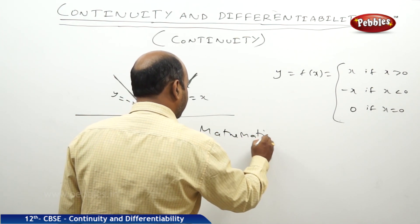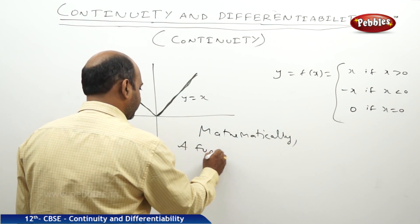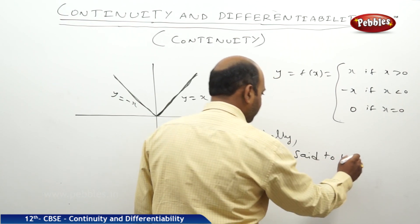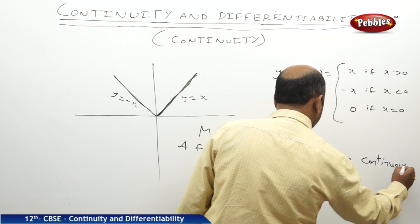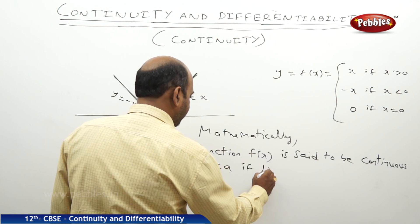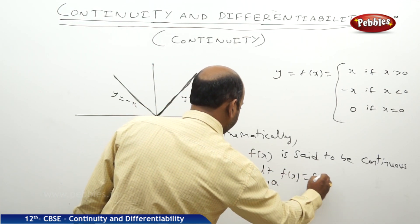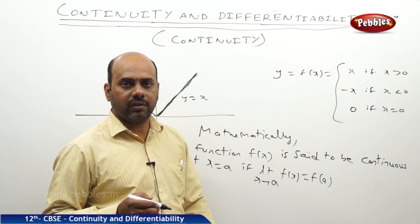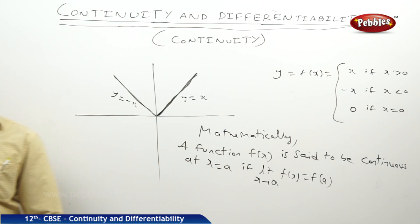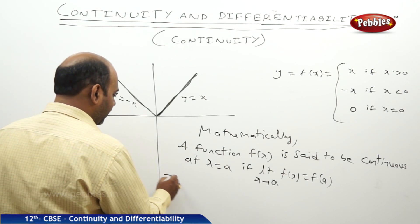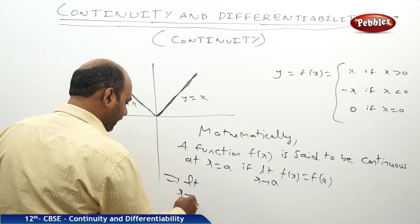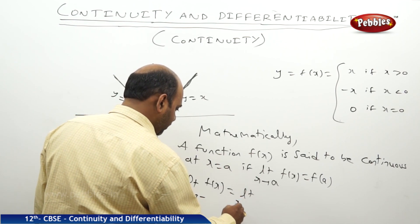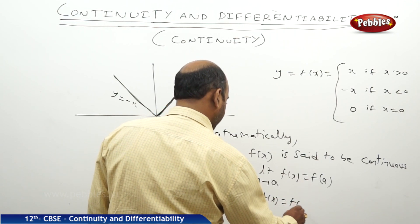Mathematically, how can we say this? A function f(x) is said to be continuous at x = a if limit x→a of f(x) equals f(a). That means the limit of the function should exist, and if it is existing, it should be equal to f(a) — which we call the value of the function. In general, a function is said to be continuous if the left-hand limit, limit x→a⁻ f(x), equals the right-hand limit, limit x→a⁺ f(x), and both equal f(a).